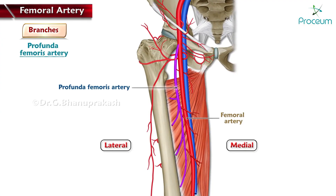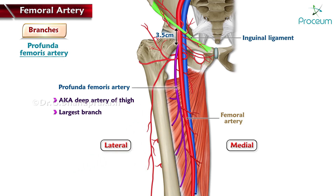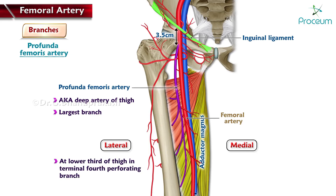The profunda femoris artery, also known as the deep artery of the thigh, is the largest branch of the femoral artery. It arises approximately 3.5 centimeters distal to the inguinal ligament and passes downward behind adductor longus, ending in a small terminal branch that pierces adductor magnus at the lower third of the thigh as the terminal fourth perforating branch.